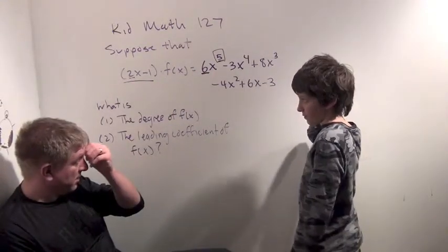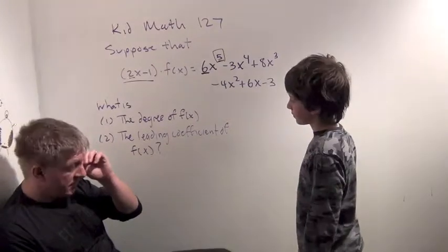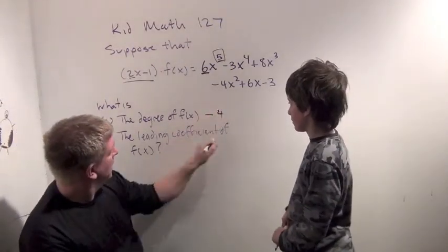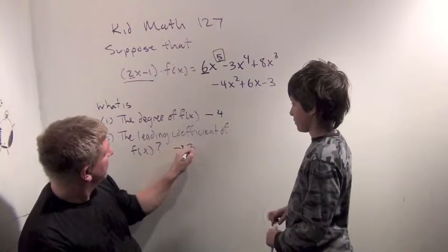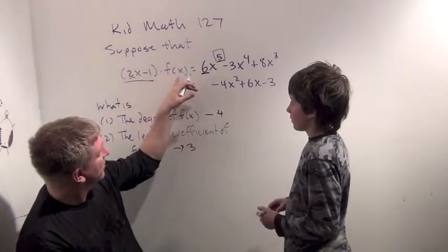All right. Very good. Very good answer. So the degree was 4, and the leading coefficient was 3. So we know there's a 3x to the 4th in f of x.